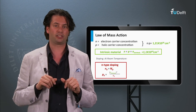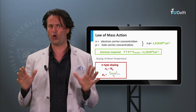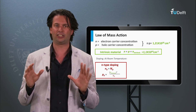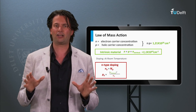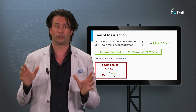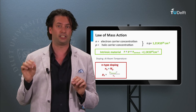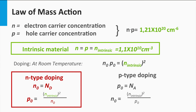Now we consider an n-doped silicon material. We incorporate a density of phosphorus atoms in the lattice, which we call Nd. We assume that all donors give a free electron to the lattice, so the electron density n0 is equal to Nd. We can then calculate the hole density p0: the law of mass action tells us p0 is equal to the square of the intrinsic charge carrier density divided by the electron density n0. The same is valid for p-doped silicon materials. We incorporate boron atoms with a density nA in the silicon network. We assume that all acceptors take one electron and therefore create a hole density p0 equal to the acceptor density nA. This means that the electron density n0 is equal to the square of the intrinsic charge carrier density divided by the hole density p0.